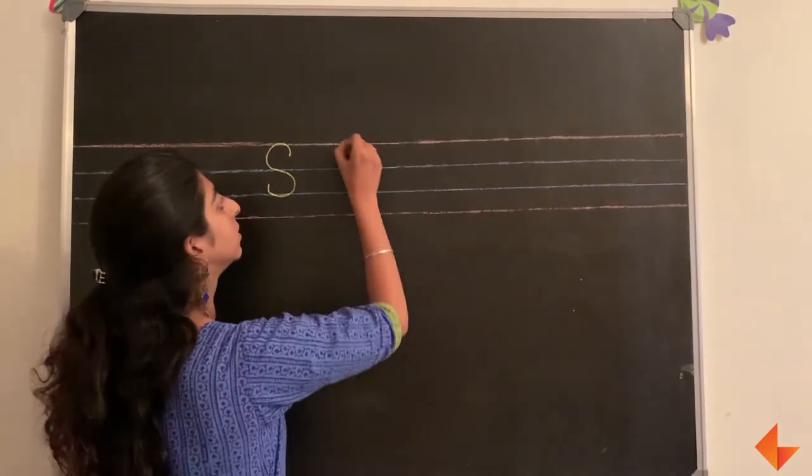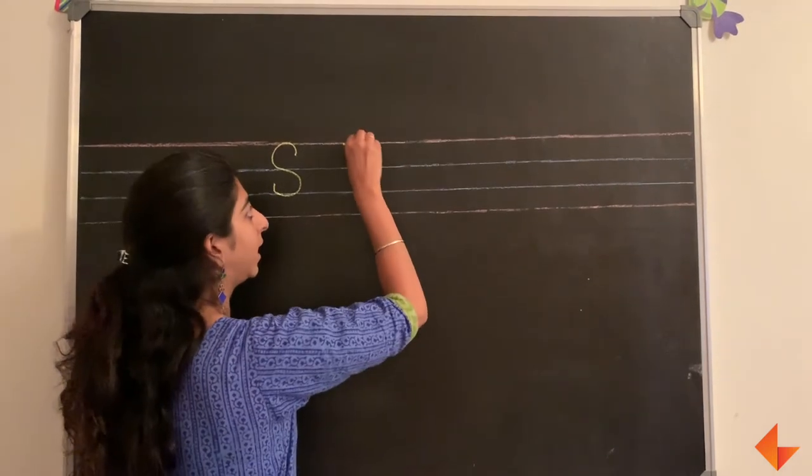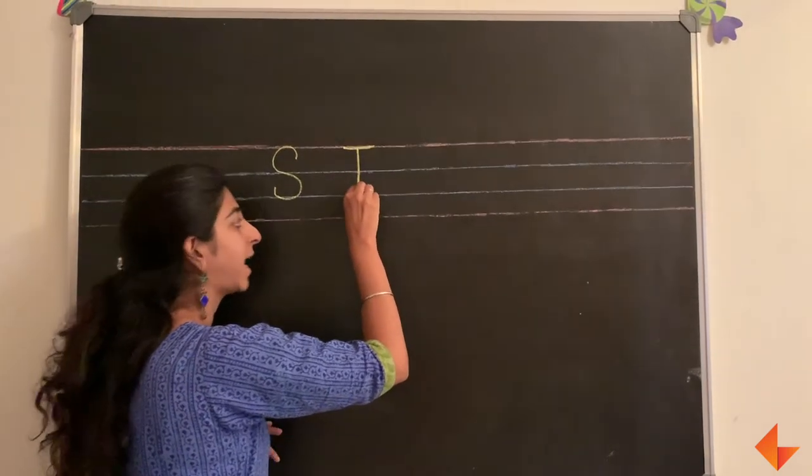To write the letter T, make a small sweeping line on top and draw a standing line.